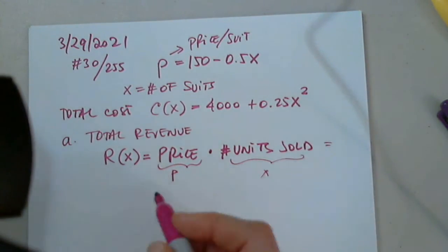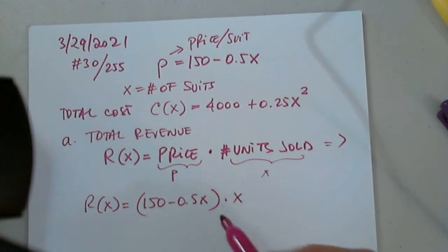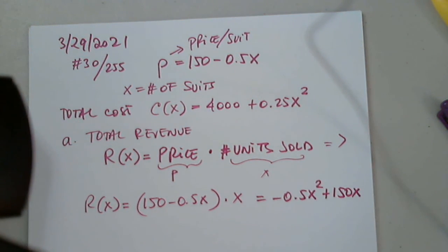So, then, from here, revenue, total revenue will be price, 150 minus 0.5X, multiplied by X, price times the number of units. I distribute, arrange it in the correct order, so I get the revenue.